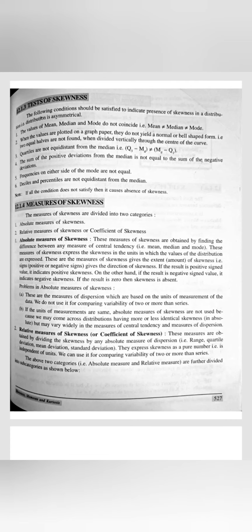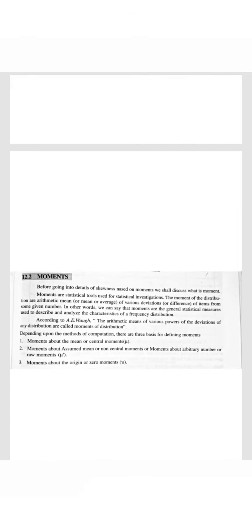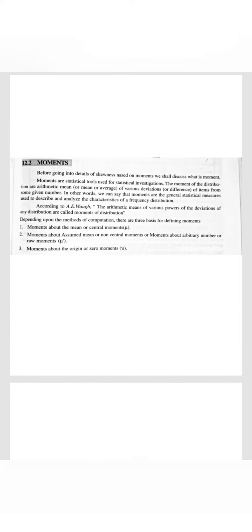Then the difference between dispersion and skewness — do cover that. Then what are the various measures of skewness — the methods for measuring skewness, which we have already done in numericals. There are absolute and relative measures with their categories. Then there is a topic on moments — numericals on moments are not in your syllabus, but if a theory question is asked about moments, there is theory provided.